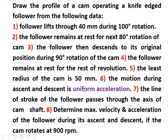The motion during ascent and descent is uniform acceleration — very important data. The line of stroke of the follower passes through the axis of the cam shaft. This problem up to point 7 is for diploma students, and point 8 is particularly for degree engineering students: determine maximum velocity and acceleration of the follower during its ascent and descent if the cam rotates at 900 rpm.